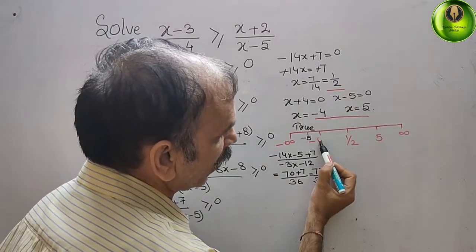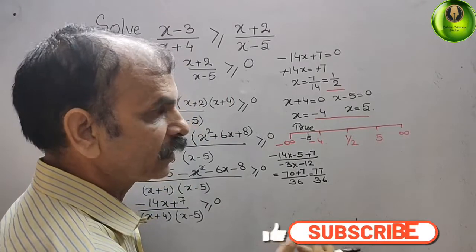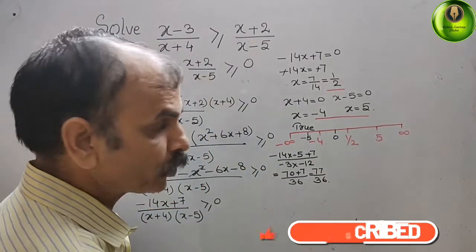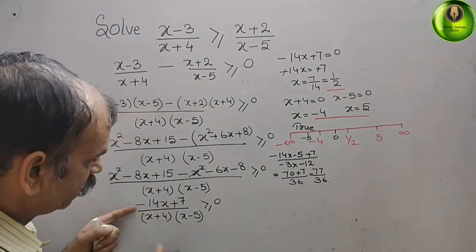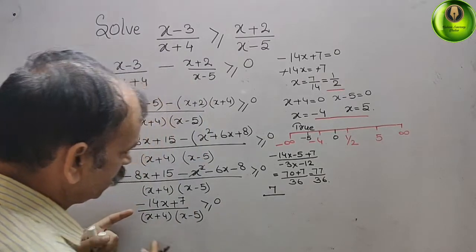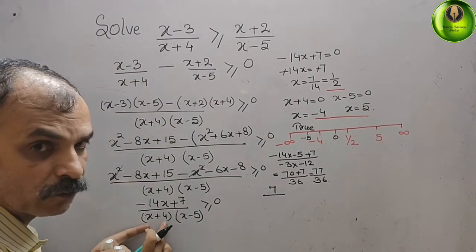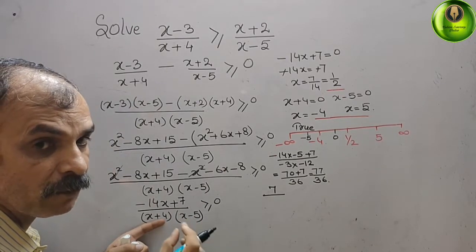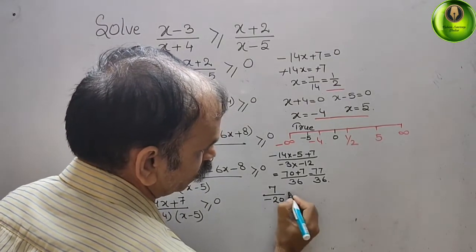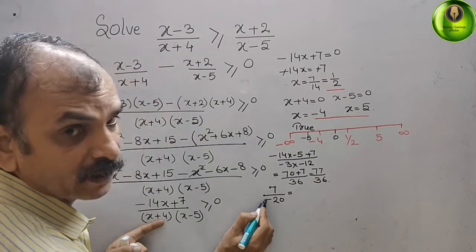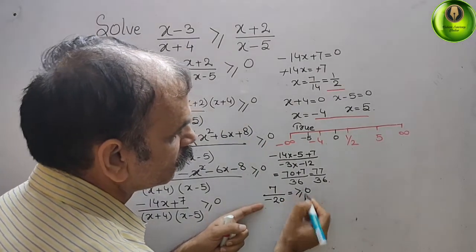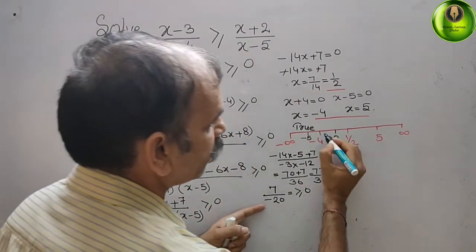Now we take a value between minus 4 and 1 by 2. We can take 0. Substituting x equals 0: minus 14 into 0 plus 7 gives 7. Denominator: 0 plus 4 is 4, and 0 minus 5 is minus 5, so 4 into minus 5 is minus 20. Result is 7 by minus 20 — negative, so it is FALSE.